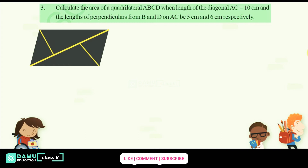So we draw quadrilateral ABCD — quadrilateral means 4 sides. What they have given is that the diagonal AC will be 10 cm.